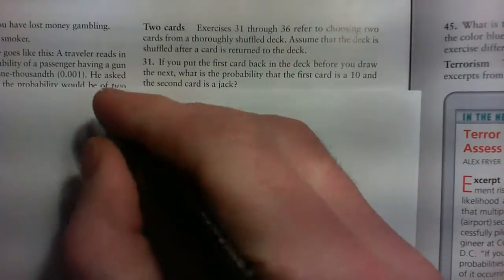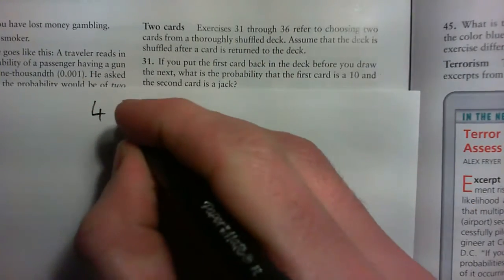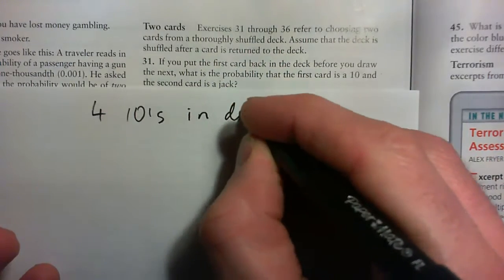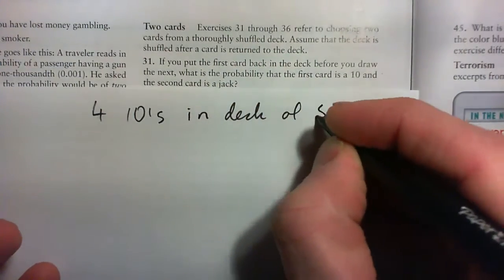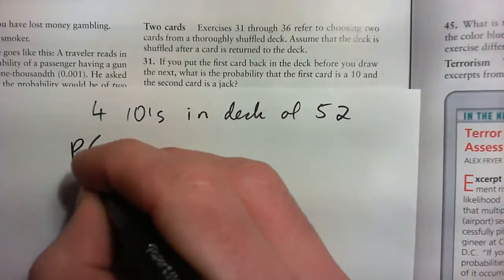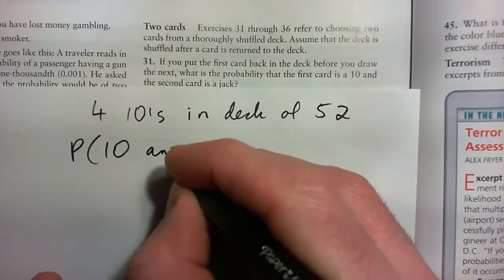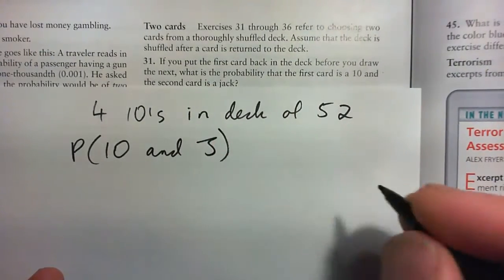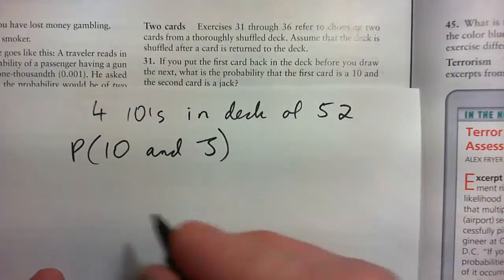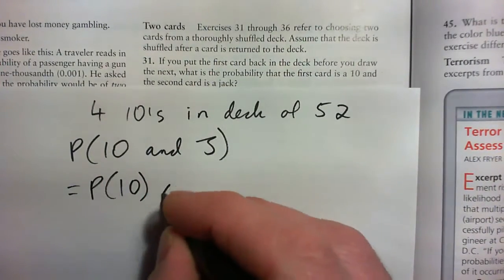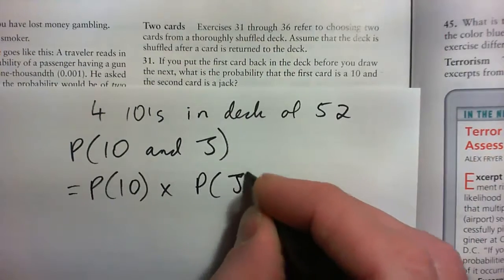The first card is a 10. Remember there are four 10s in a deck of 52. So the probability of getting a 10 and a jack, using the product formula, because these are independent events, is probability of getting a 10 times probability of getting a jack.